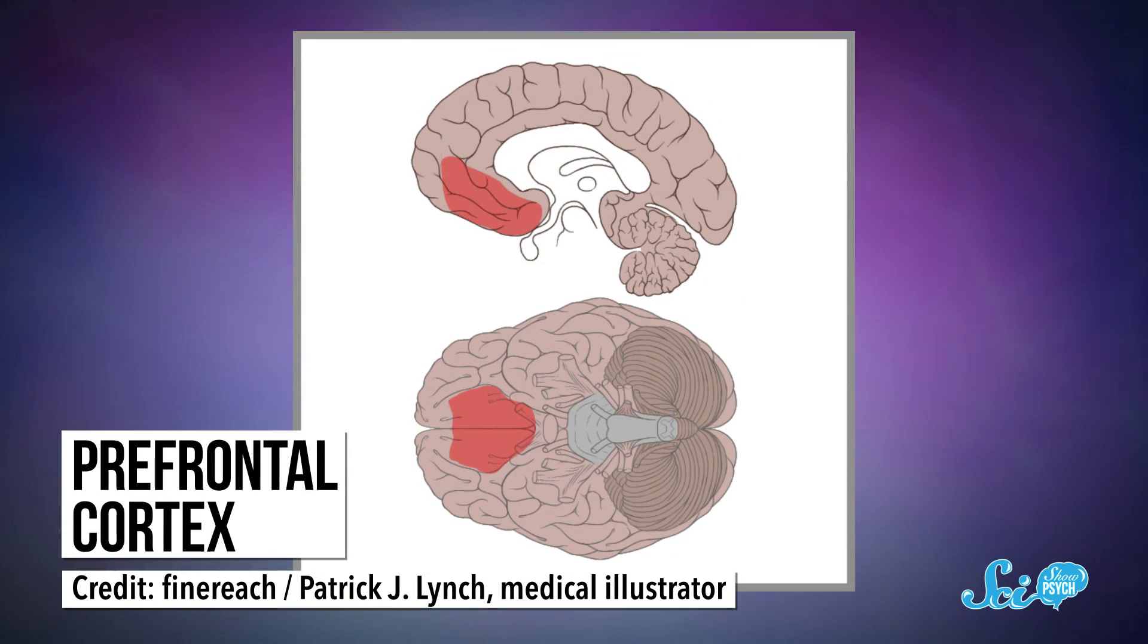There's still the other component to risk-taking, though. The brakes. Some people, even if they have high sensation-seeking, are just better at controlling their impulses and desires than others. In studies, there's a part of the brain that's almost always activated when people exercise self-control: the prefrontal cortex, which seems to be responsible for telling the limbic system when to cool it.